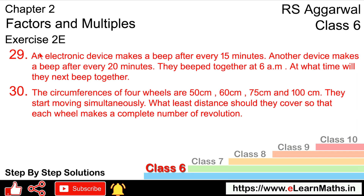Let's do question number 29 of exercise 2E, that is factors and multiples. An electronic device makes a beep after every 15 minutes. Another device makes a beep after every 20 minutes. They beep together at 6 AM. At what time will they next beep together?